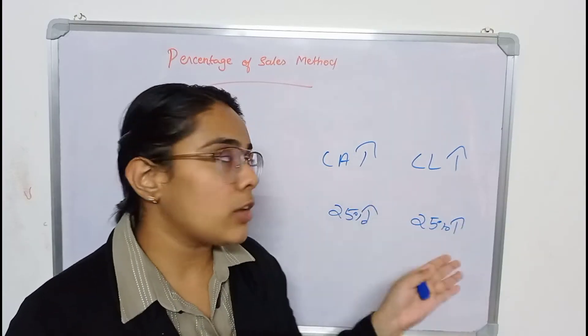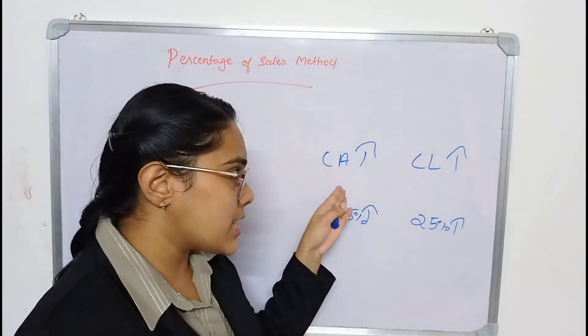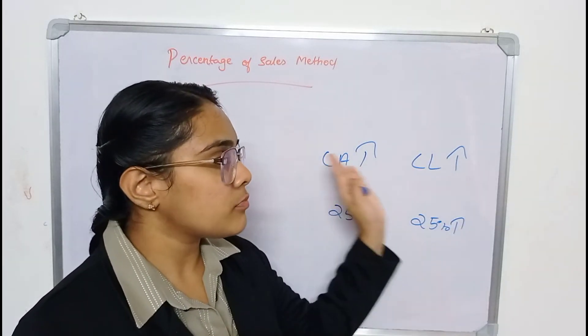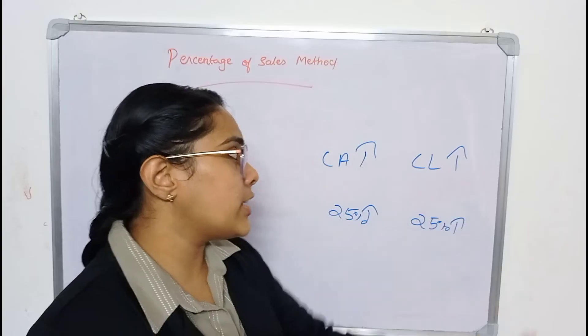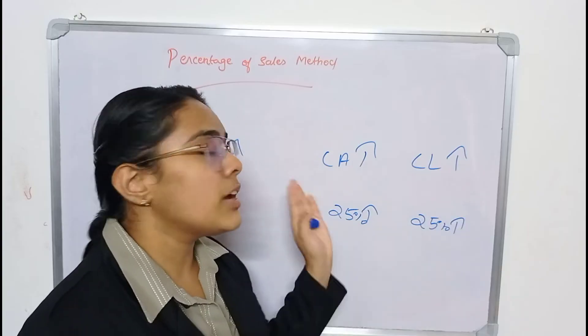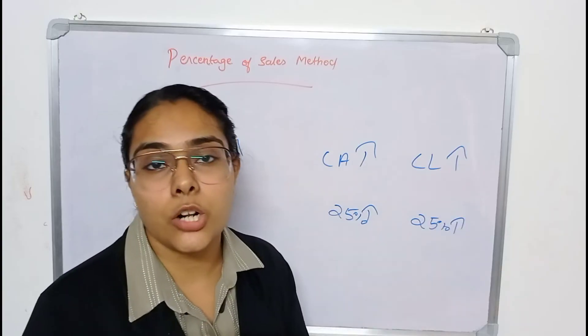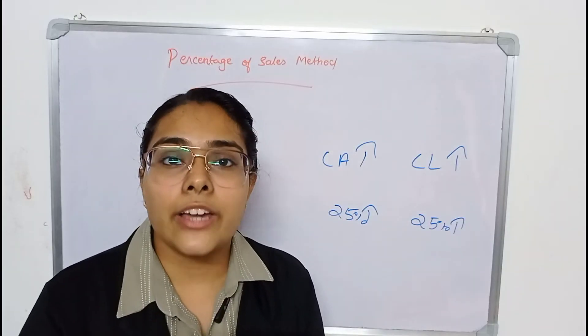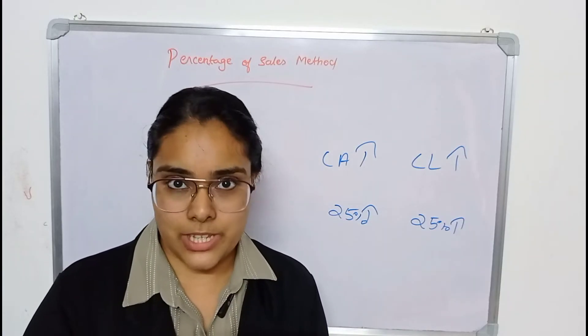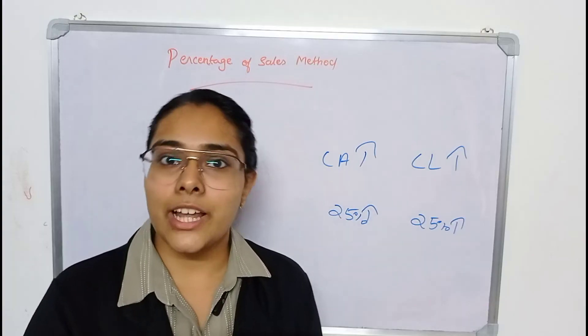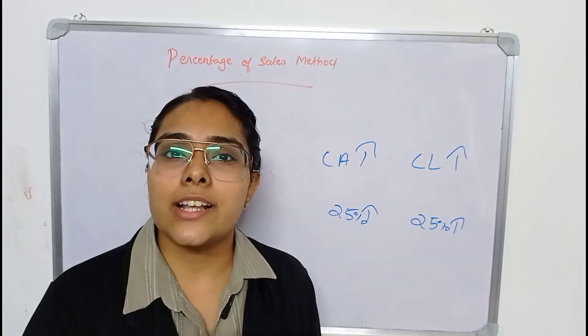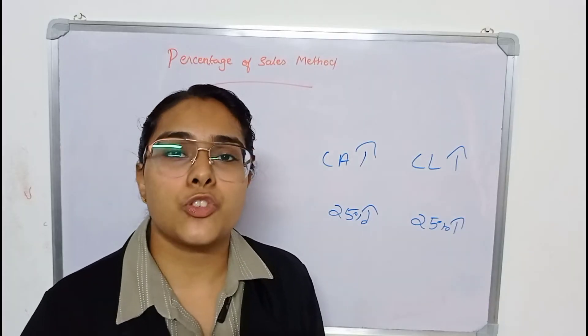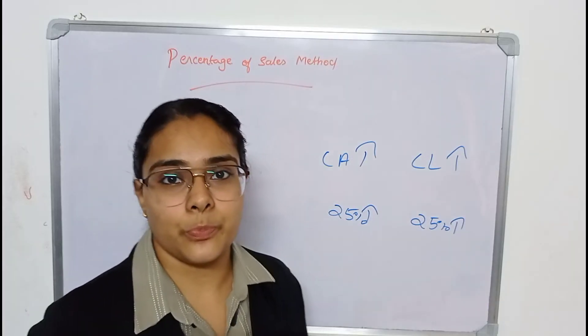You have to find out the total of current assets, then deduct the total of current liabilities from current assets in order to get the required working capital amount. That is it. So let us quickly go on to our problem.